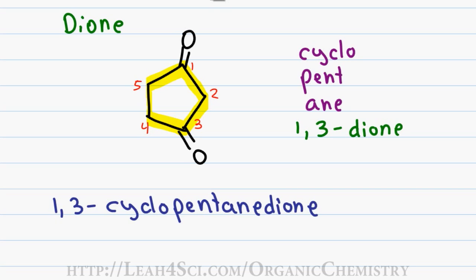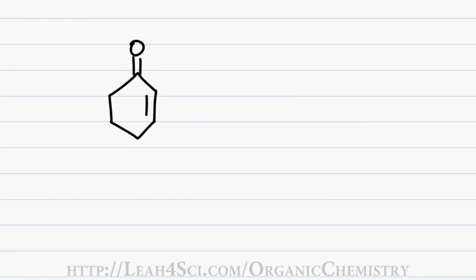Let's take a look at this example that has both a ketone and a double bond in the ring. We start by highlighting and identifying the parent chain and then number to give the higher priority group the lower set of numbers. Since a carbonyl is higher in priority than a pi bond, the ketone gets the number 1 and then we continue numbering so that the pi bond gets the next lowest set of numbers.